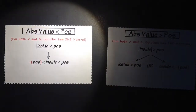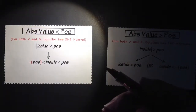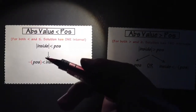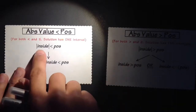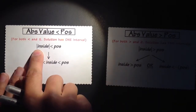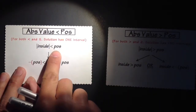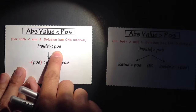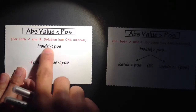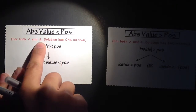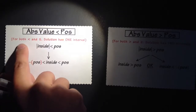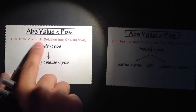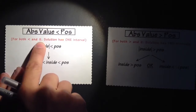Hi! Let's talk about absolute value inequalities. The first situation I would like to take a look at is when we have an absolute value on the left hand side that is less than a positive number. This situation also works with less than or equal to instead of just less than, so it applies to both of these inequalities.